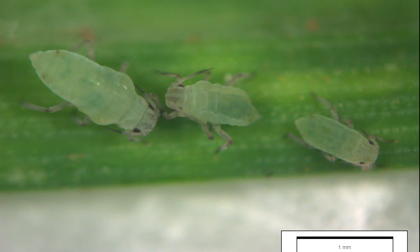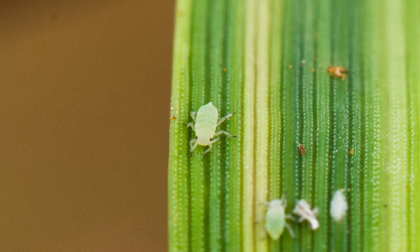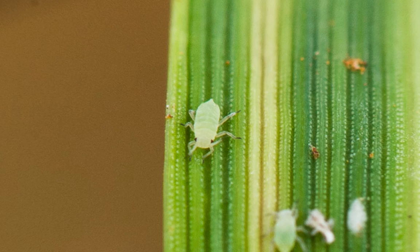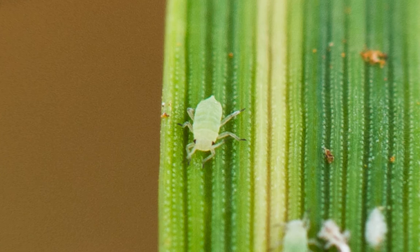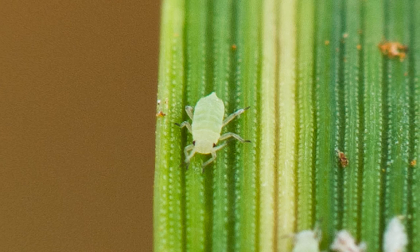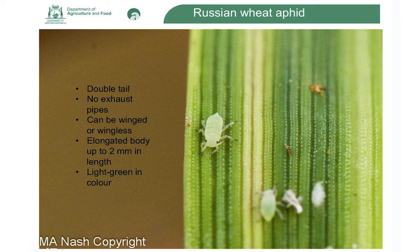The oat and corn aphids are a little bit pear-shaped, whereas the Russian wheat aphid is much more slender and tapered. At least we have some really good characteristics to work with here. Some can be winged and some can be wingless — the winged ones are much harder to identify, so really hone in on the wingless version.